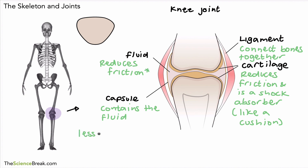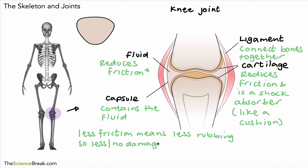The idea of reducing friction is very important. Because if you have less friction, that means you're going to have less rubbing of the bones. If the bones are rubbing together less, then there's going to be less or no damage done to the ends of the bones. So that's why we have fluid and cartilage there — to reduce the friction. So there we have it: the joints in the body, the function of the joints, and the structure of a fairly typical joint in the body and what the different parts do.